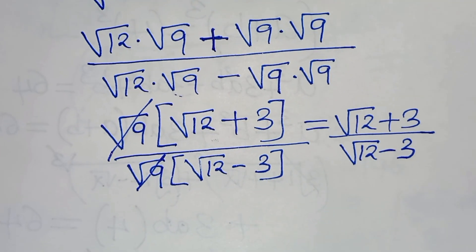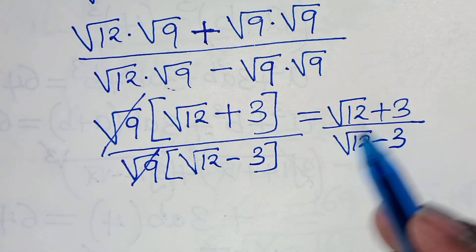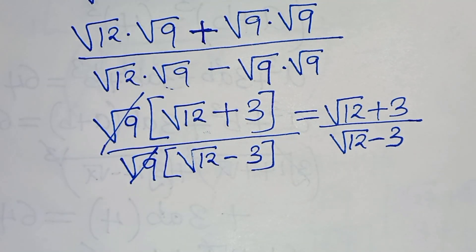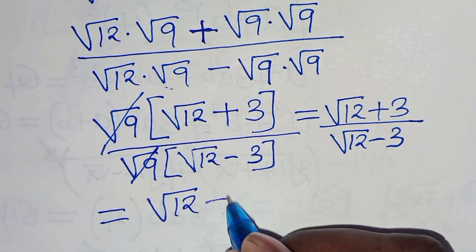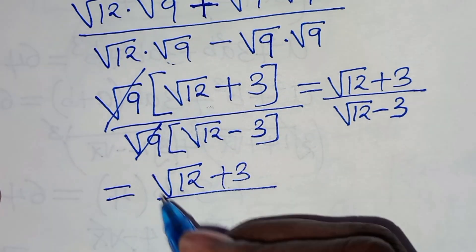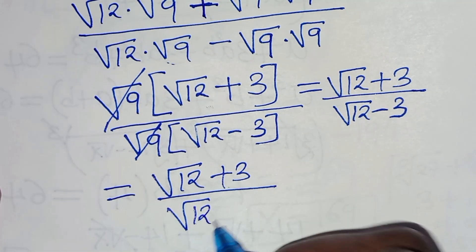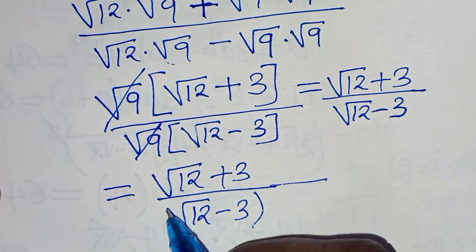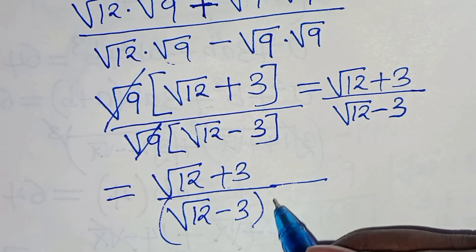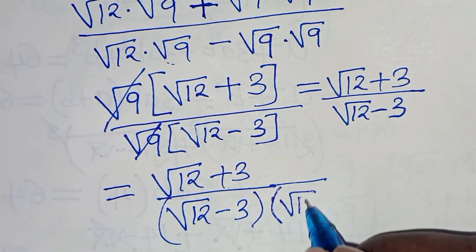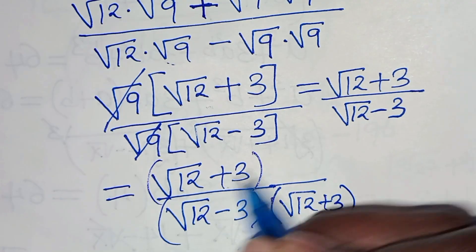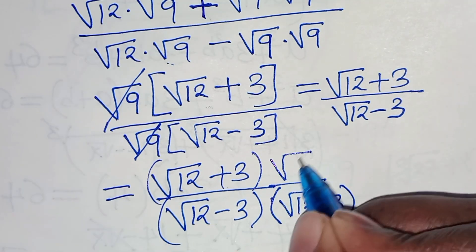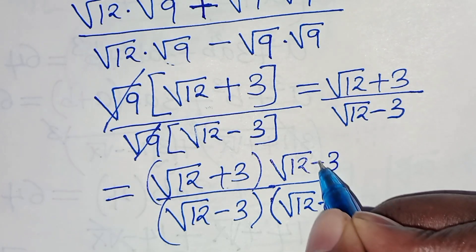The next step is to rationalize the denominator by introducing a conjugate. So we have square root of 12 plus 3, divided by square root of 12 minus 3. Rationalizing the denominator, we multiply by the conjugate, which is square root of 12 plus 3, in the denominator as well as in the numerator.